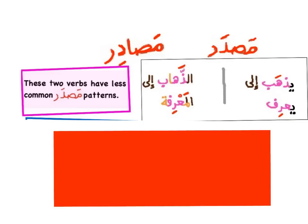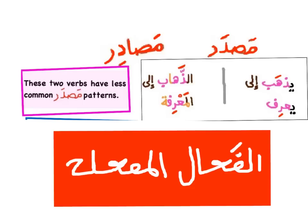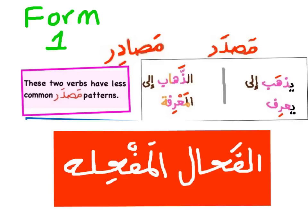The last variable patterns in Form 1 are Al-Fa'al and Al-Maf'ila. Al-Fa'al: for example, يذهب إلى (he goes to) → الذهاب إلى (going to/to go to). Al-Maf'ila: for example, يعرف (he knows) → المعرفة (knowledge/to know). These two verbs have less common Mazdar patterns, and this completes Form 1.